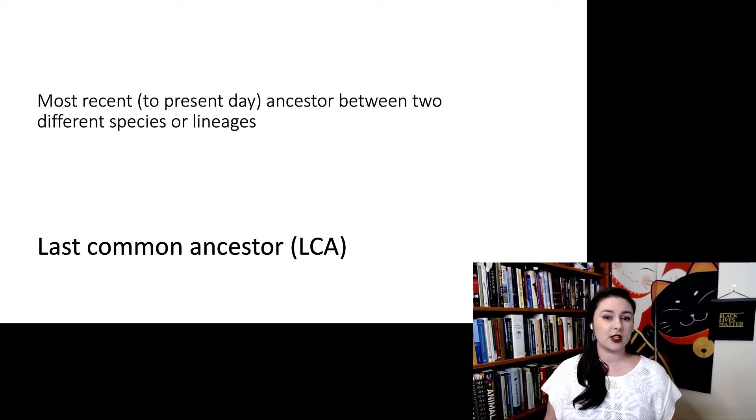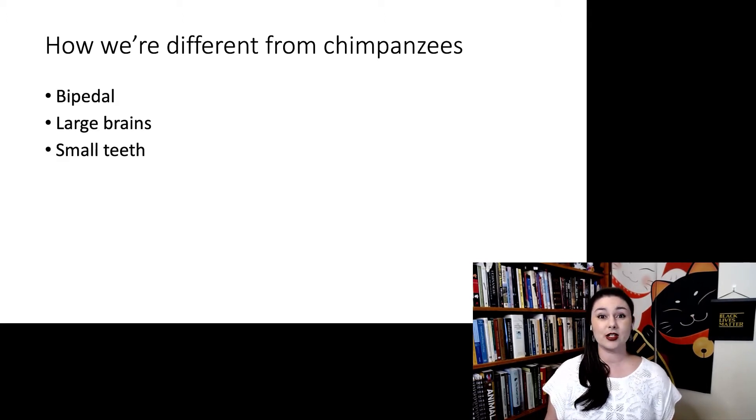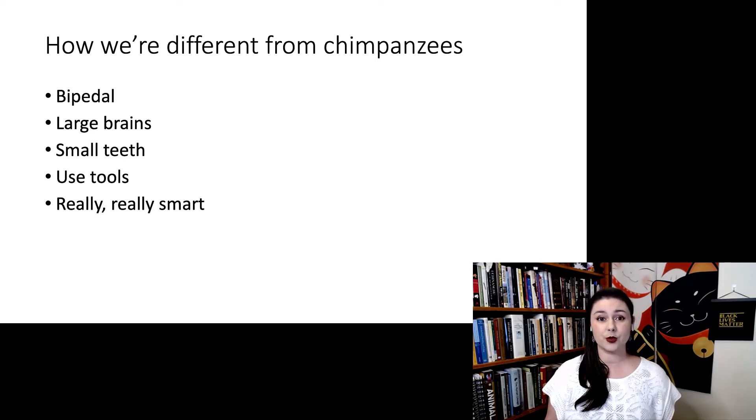When we're trying to figure this out, one thing that's helpful to do is remind ourselves of all the ways that we are different from chimpanzees. There are a lot. And I highly recommend you go back and rewatch the skeletal anatomy lectures. But in summary, we are bipedal. We have large brains. We have smaller teeth. We use tools. And we're just really smart. And you can see three things on this list relate to our brains and how smart we are. There are, of course, many other smaller features, but these are nice ones to focus on right now.